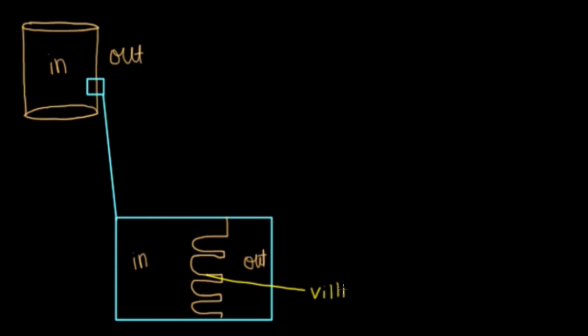And a single one of them is just called a villus. Just a single villus. And these are just a couple of folds or these outpouchings that help increase the surface area of our duodenum.